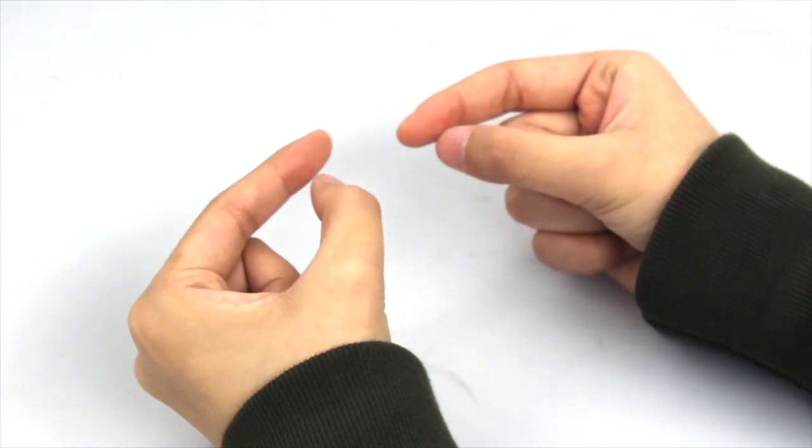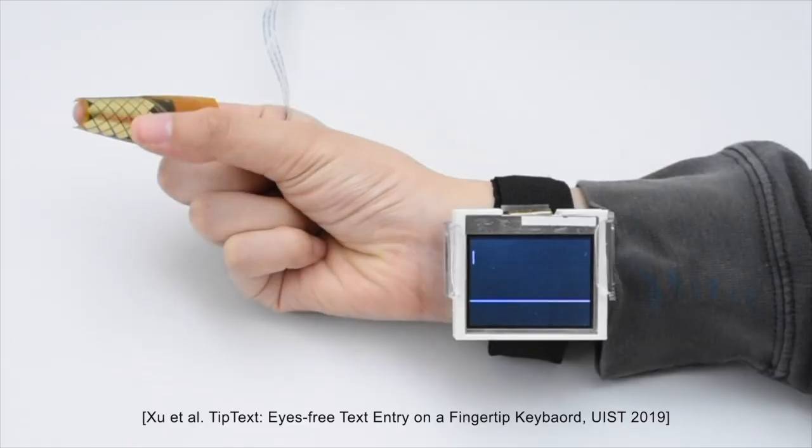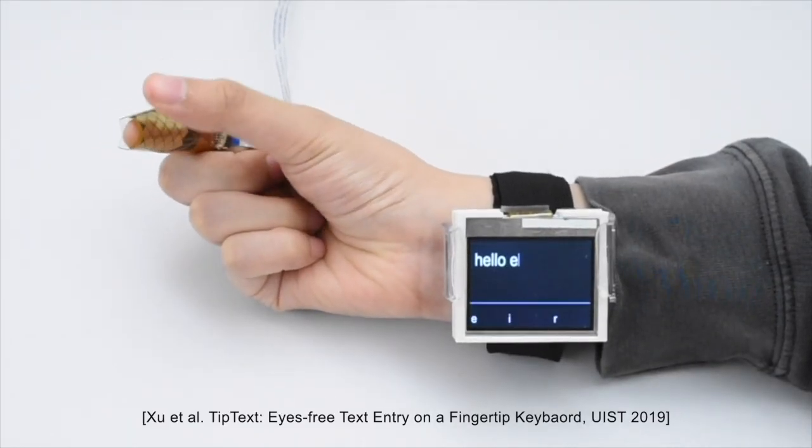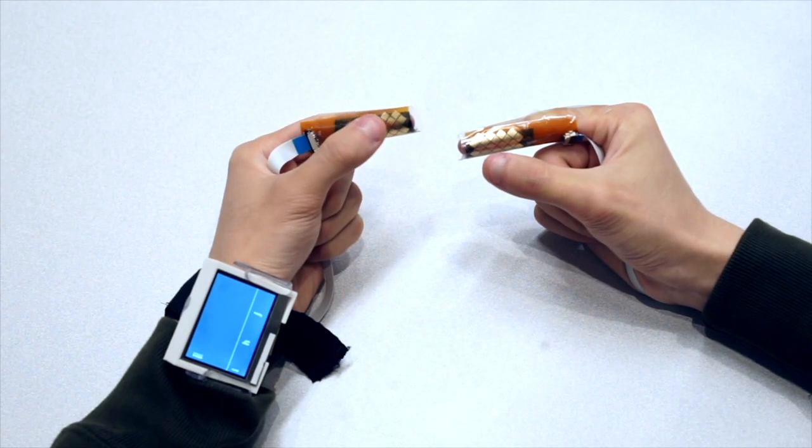Bi-Tip Text supports eyes-free input by utilizing users' natural spatial awareness of key location on the index finger. Unlike the previous work where thumb-tip typing is carried out on a single index finger, the input space for bi-manual text entry is doubled using both index fingers.